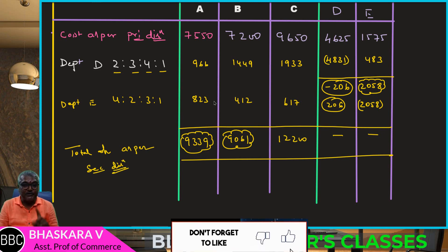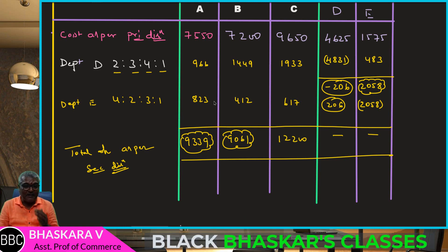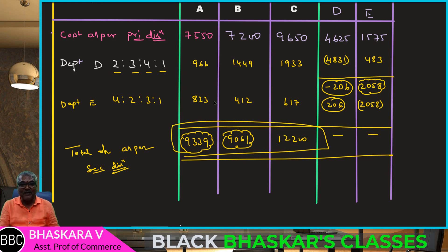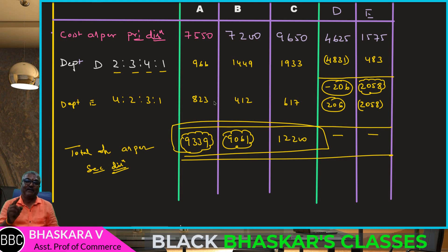This was the repeated distribution method. The values from the question paper are verified. Please like, comment, and share. See you in the next session.